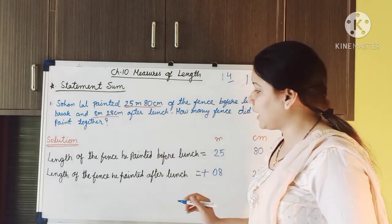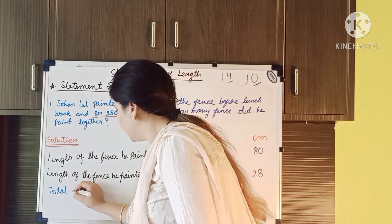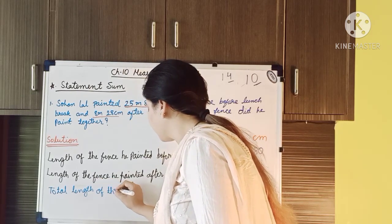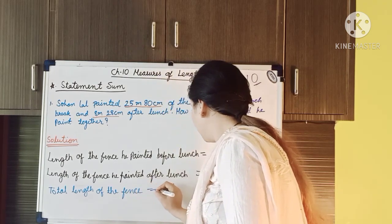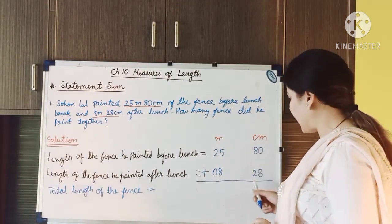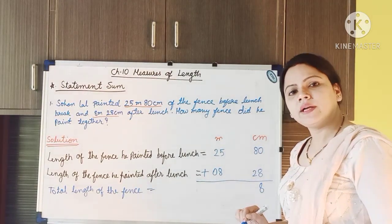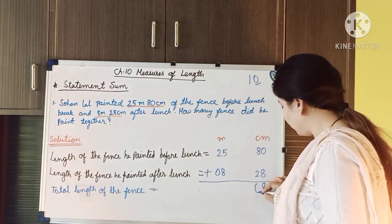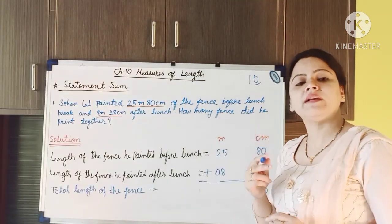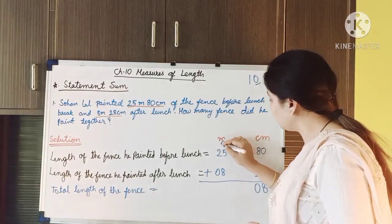Now the third statement we have to write: total length of the fence. Now we have to add these numbers. 8 plus 0 is equal to 8. 8 plus 2 is equal to 10. So we write 0 here — we cannot write 10 here because in the centimeter column we can write up to only a 2-digit number. So this 1 will carry over to the meter place.